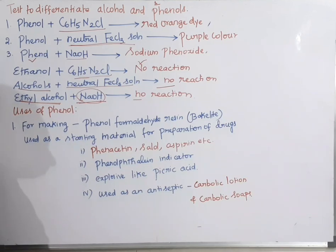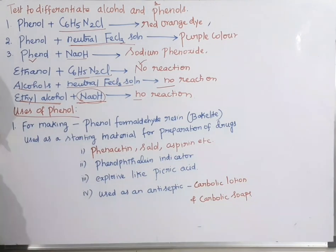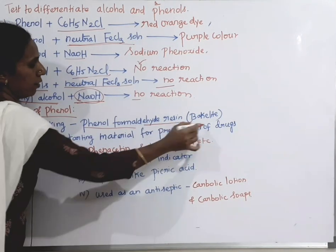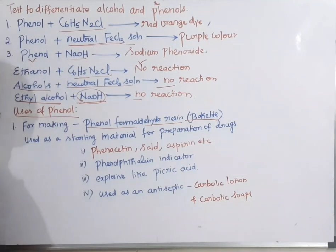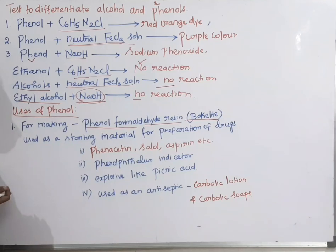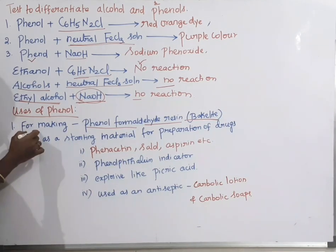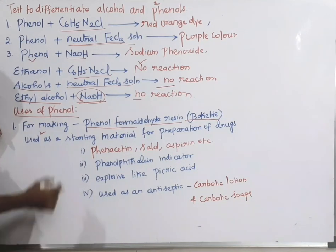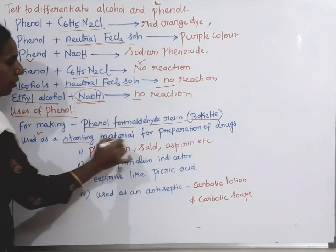Next, let us see about the uses of phenol. Phenol is used for making phenol-formaldehyde resin, otherwise called Bakelite. That is, phenol reacts with formaldehyde to form phenol-formaldehyde resin, also called Bakelite. It is also used as a starting material for preparing drugs.